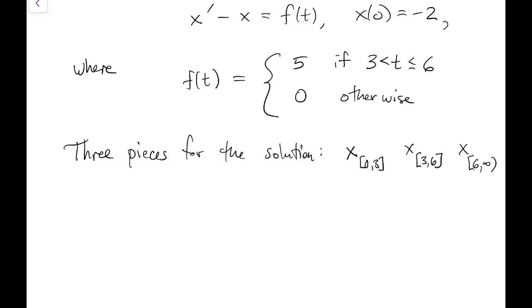So we pick those up in order. In the first part, the forcing function is 0 between time 0 and 3. So we just solve the homogeneous problem x prime equals x with the given initial value. This is a routine problem for us by now. We know the solution is exponential, and since the initial condition is given at 0, then the solution is just negative 2 times e to the t.